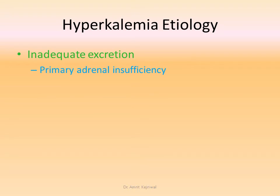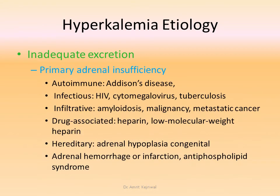Primary adrenal insufficiency causes include autoimmune, adhesions, infectious causes such as HIV, cytomegalovirus, tuberculosis, infiltrative amyloidosis, malignancy, and metastatic cancer. Drug-associated causes include heparin, low molecular weight heparin, hereditary adrenal hypoplasia which is usually congenital, adrenal hemorrhage or infarction, and antiphospholipid antibody syndromes.